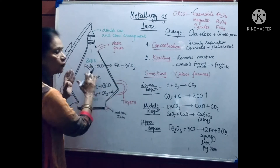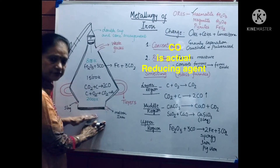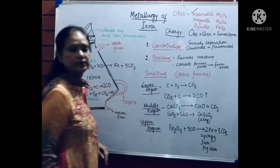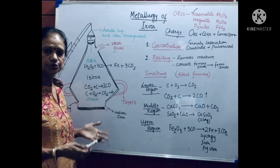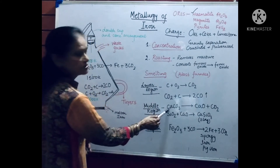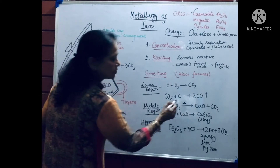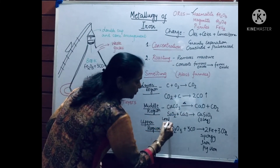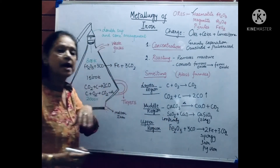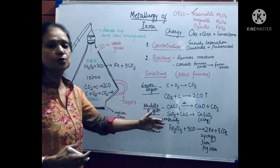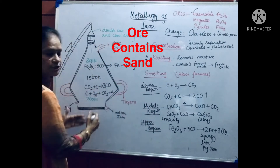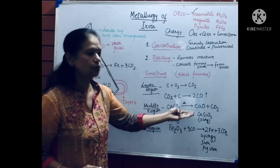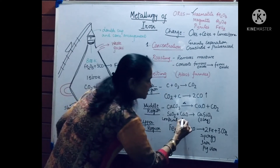Iron is heavy, so it falls down to the base of the furnace. Now, limestone is chemically calcium carbonate. In the middle part of the furnace, calcium carbonate breaks down into calcium oxide and carbon dioxide. This calcium oxide combines with the impurity of sand (silica, SiO₂) present in the iron ore to form calcium silicate. This calcium oxide is known as flux.